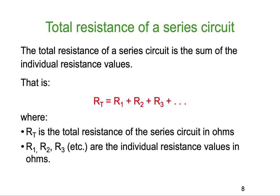So, the total resistance of a series circuit is the sum of the individual resistance values. So, here's the formula, I want this part here in red. RT, R total, is equal to R1, plus R2, plus R3, plus R4, plus R5, however many resistors you have in the circuit, you just add them all up.